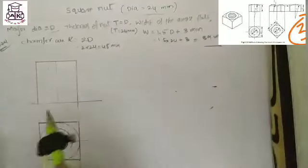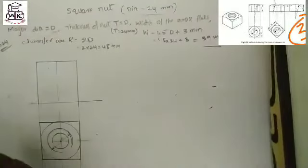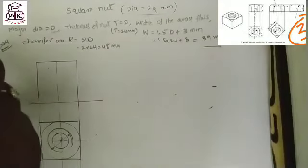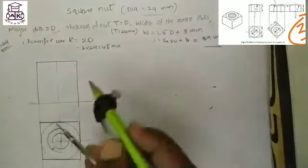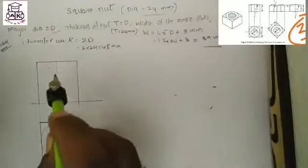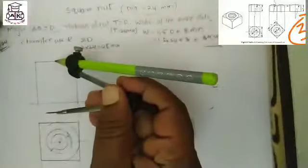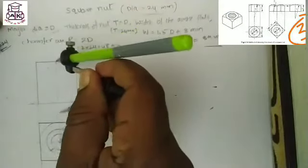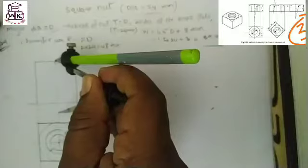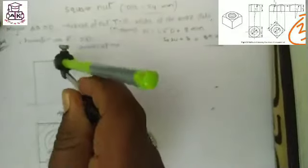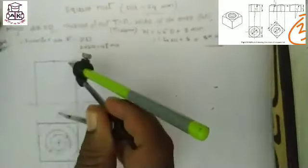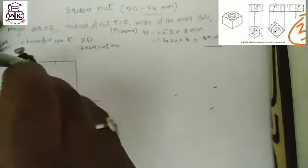Take radius R equal to 2d, so 2d equals 48 mm. Since diameter equals 24 mm, set the compass to radius 48 mm and draw the arc for the chamfer.